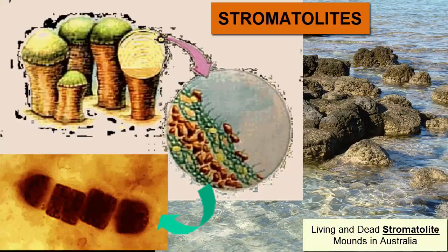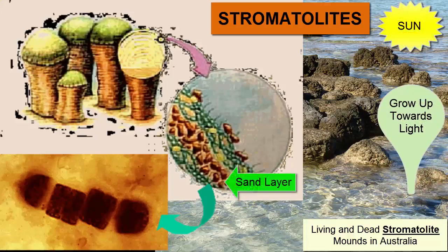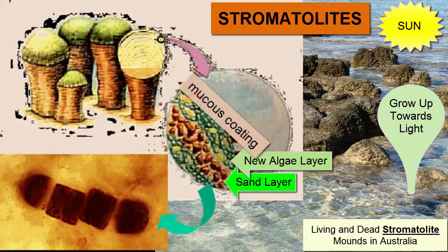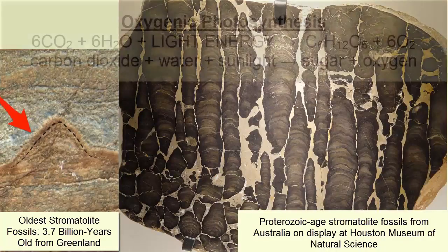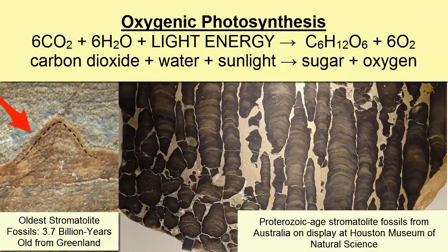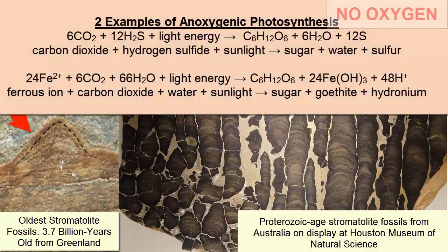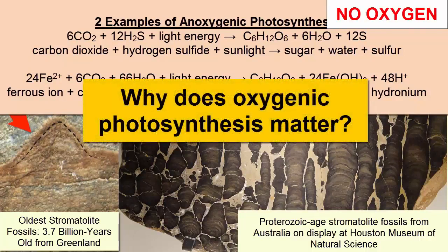Stromatolite mounds form by successive layers of photosynthesizing cyanobacterial mats growing in a coastal environment and doming upwards towards the light. Each layer trapped sand within it, ultimately blocking the light, requiring new layers to form atop the old ones. The cyanobacteria are protected from the ultraviolet rays of the sun by the thick mucus coating in which they live. This image shows what fossilized stromatolite mounds look like. Today, photosynthesis is primarily oxygenic, producing oxygen as a waste product. However, the earliest form of photosynthesis was not an oxygen-producing one.